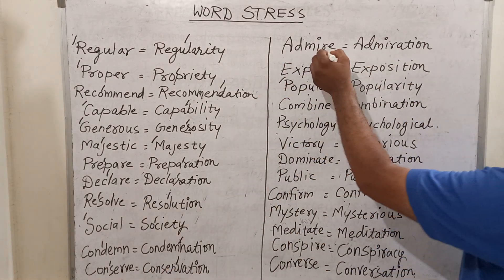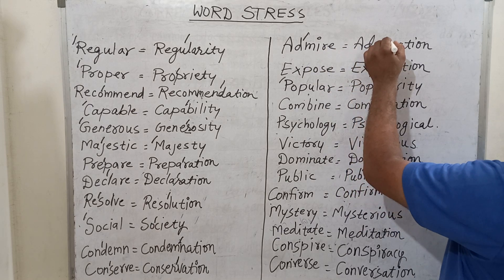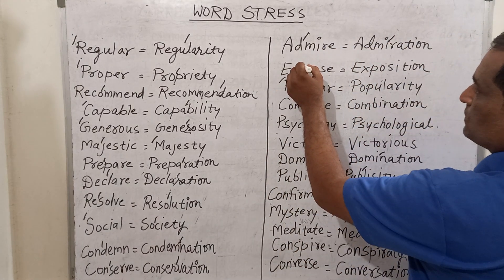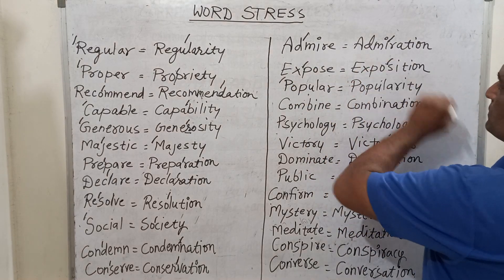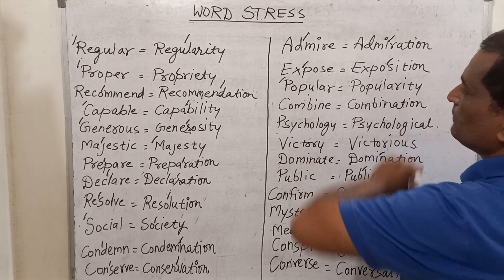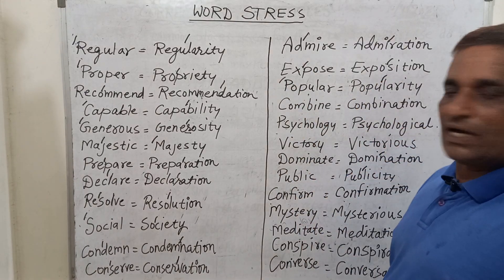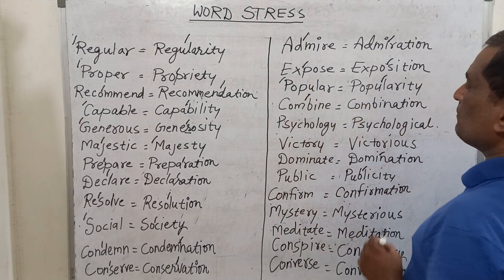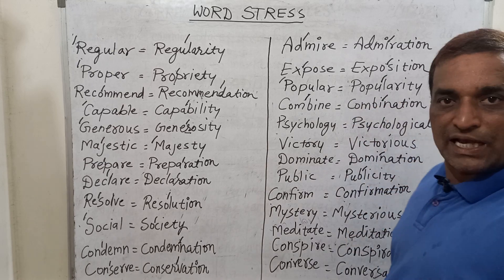Next is 'admire' — the stress will come before M: 'admire'. And for 'admiration', the stress will come before R. For 'expose', the stress will come before P, and for 'exposition', the stress will come before S. For 'popular', the stress will come before P, and for 'popularity', the stress will come before L. For 'combine', the stress will come before B, and for 'combination', the stress will come before N.